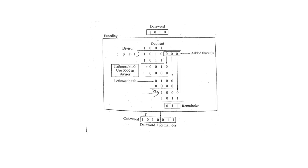When we determine the quotient, we mention the first digit. If it is 1, we use the divisor. If it is 0, the quotient is 0. We proceed digit by digit: first term, second term, third term, carrying the output through each step.